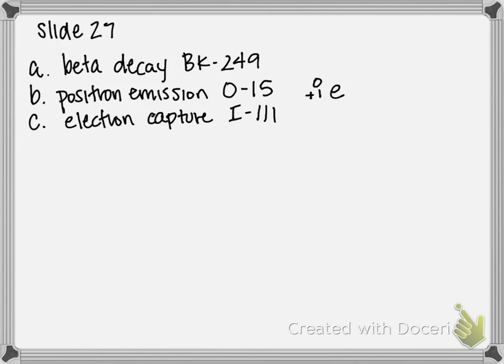So same setup as before, we're going to write our unbalanced initial reaction, figure out what element we're forming, and then we can write the balanced complete reaction. So 15 is our mass number for oxygen. Go to your periodic table, oxygen's atomic number is 8. It's got 8 protons. And we're going to put an O next to it. And we're forming something plus 0 over positive 1 E.